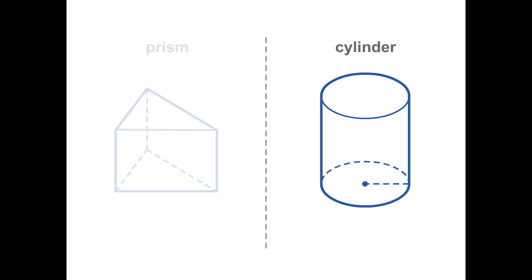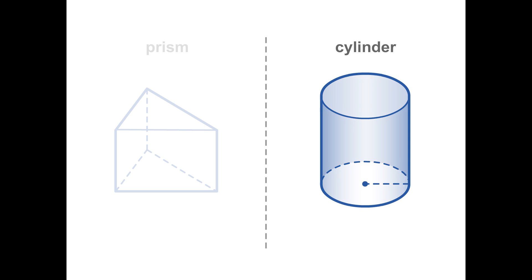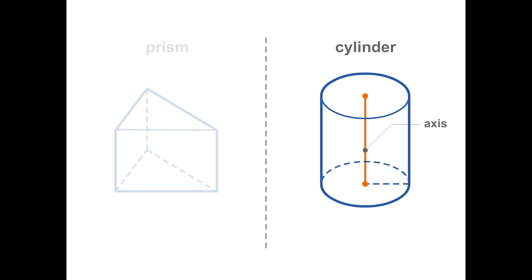These definitions are similar for a cylinder. The bases are congruent circles in parallel planes. While there are no lateral faces, the lateral surface is the curved surface between the two bases. The axis of a cylinder is the segment whose endpoints are the centers of the bases. If the axis is perpendicular to the bases, then the cylinder is a right cylinder.